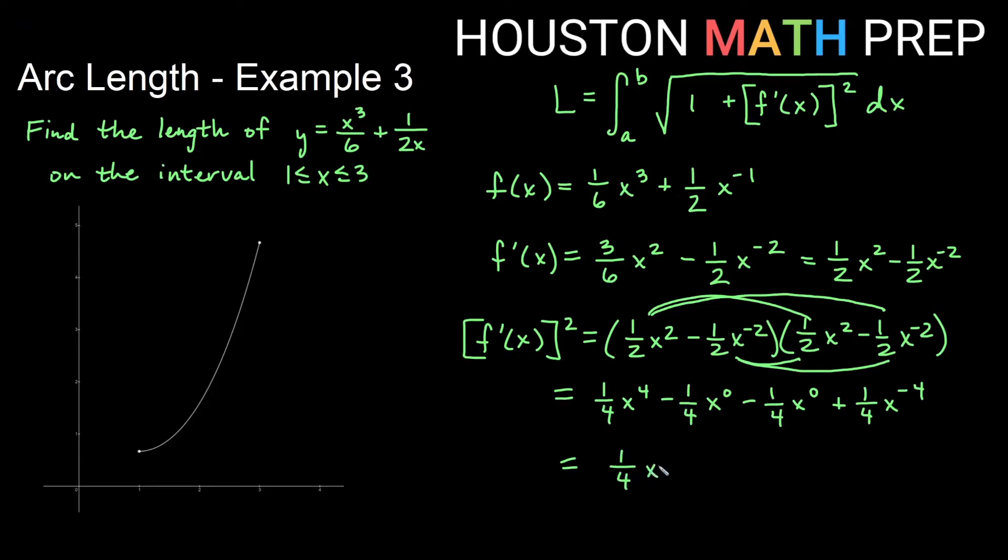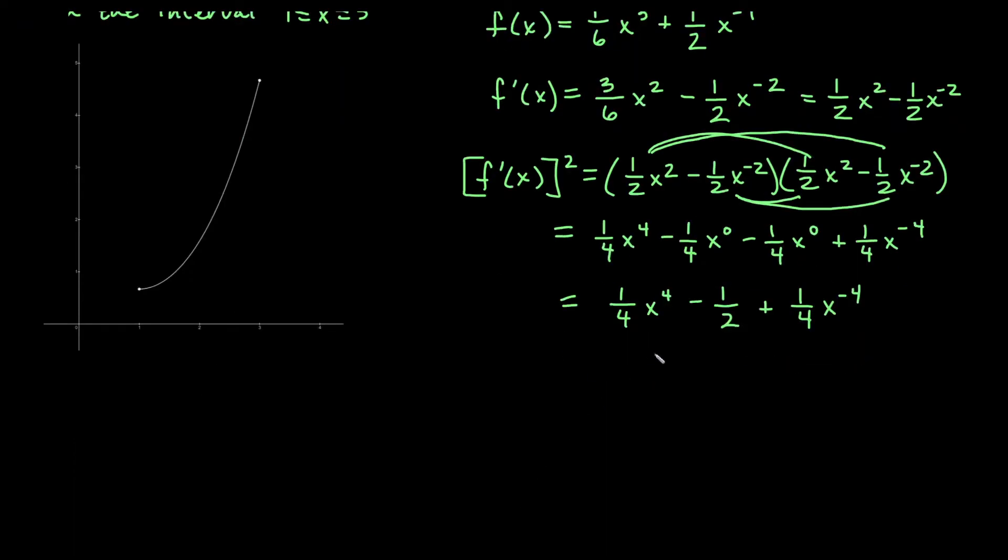So the thing we want to notice and keep in mind when we're figuring out how this really strange factoring pattern thing seems to work with these problems. If I have negative a fourth, a negative a fourth, that's negative a half, plus one fourth x to the fourth plus one fourth x to the negative four. So the idea is now in my formula, I would take what I just got and I would add one to it. So if I add one to it, in other words, if I take the one plus f prime of x all squared, then adding one is going to change this negative half to a positive half.